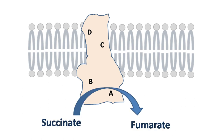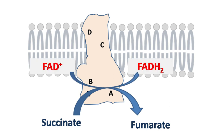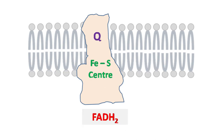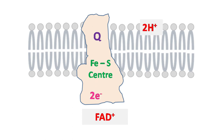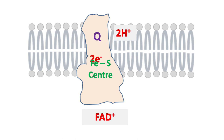Complex II catalyzes the conversion of succinate to fumarate with the help of FAD, which gets converted into FADH2. The FADH2 is then further oxidized back to FAD, and the electrons removed during this process pass to the iron-sulfur center (FeS) and finally to ubiquinone, which accepts two hydrogens to form QH2.